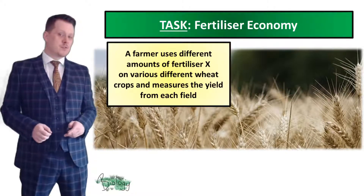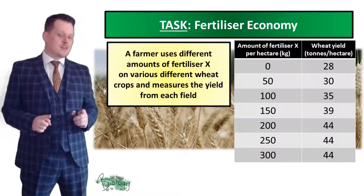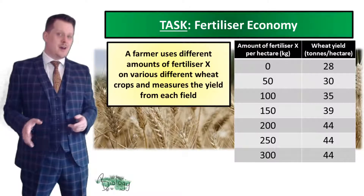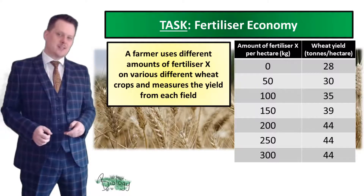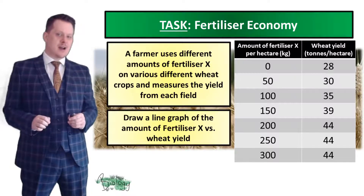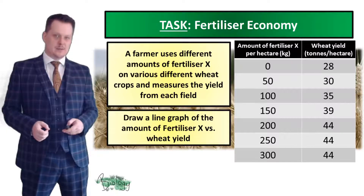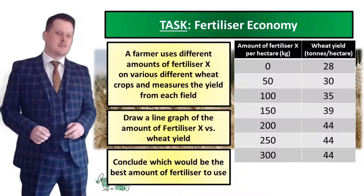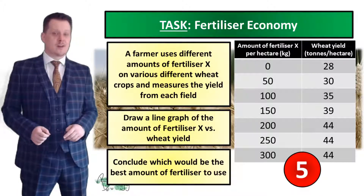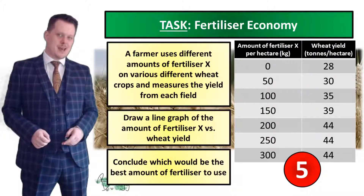The farmer's results are shown here, indicating how much fertilizer was used per hectare and how much wheat was yielded. For our next task we are going to draw a line graph of the amount of fertilizer X versus wheat yield. After drawing your graph, conclude which would be the best amount of fertilizer to use. Five seconds on the clock — pause if you need more time.